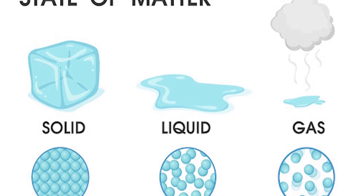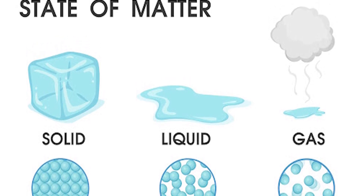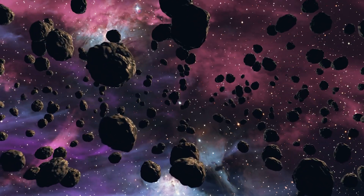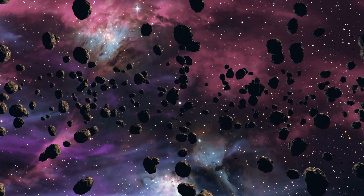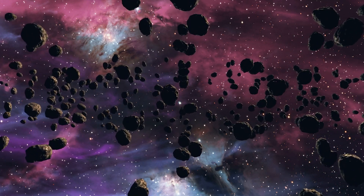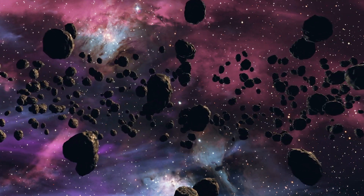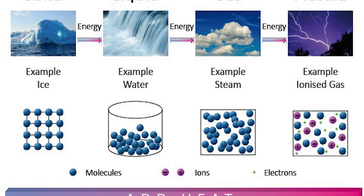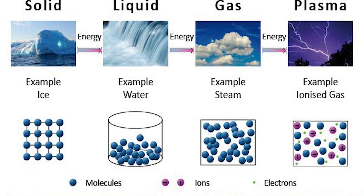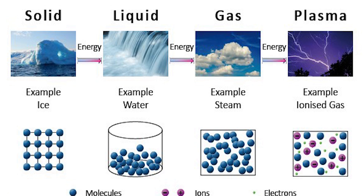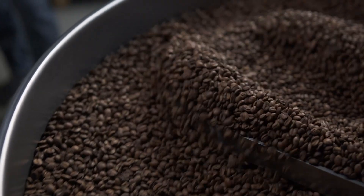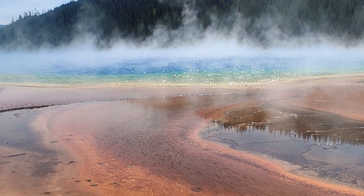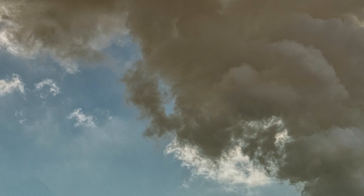Matter simply refers to anything that has a mass and takes up space. It is the physical substance that makes up the physical universe and includes everything from the tiniest subatomic particles to the largest structures in the universe. Matter can exist in various forms, such as solids, liquids, gases, and plasma. It can also be transformed from one form to another through processes like melting, freezing, evaporation, and condensation.